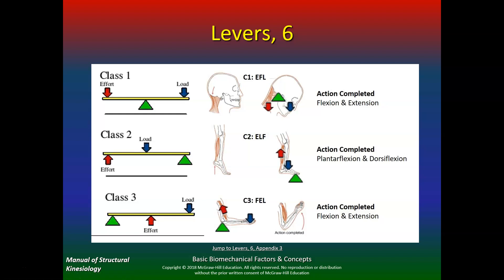Looking at a diagram: here's a first class lever, a second class lever, and a third class lever. For the biceps — here's the axis, here's the effort, and there's the load. In another example: there's the effort, the load which is your body weight, and there's the fulcrum. Then in a third example: there's the fulcrum, the effort, and the load.